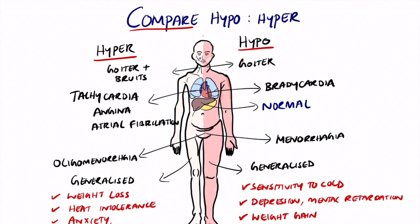In hypothyroidism, liver enzymes are usually normal. In hyperthyroidism, by contrast, there are elevated liver enzymes.